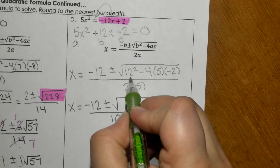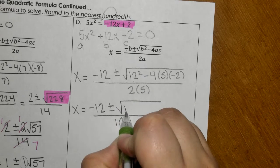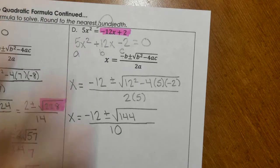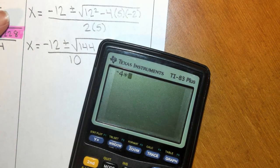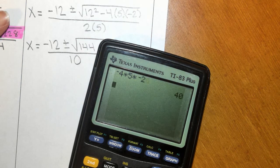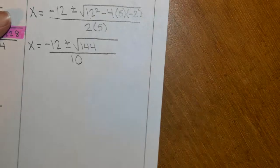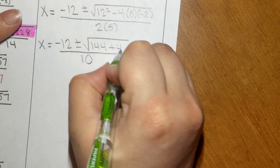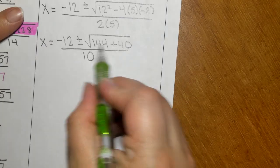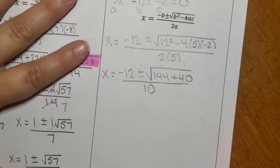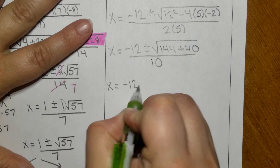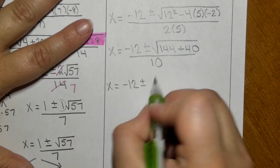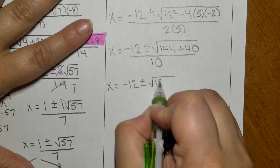So up here, 12 squared is 12 times 12, which is 144. Negative 4 times 5 times negative 2 is positive 40. So this would simplify to be the square root of 184.